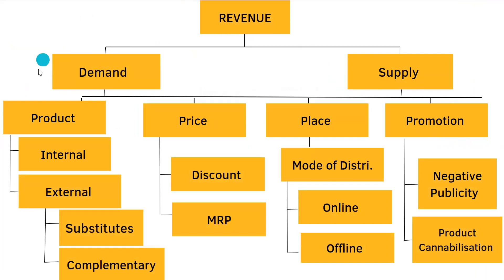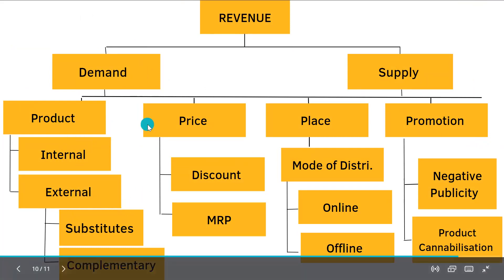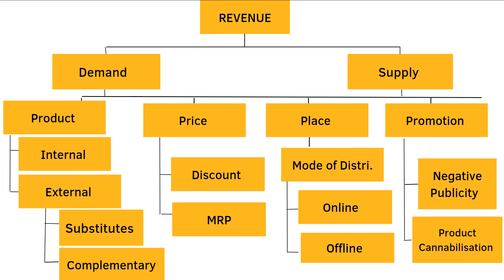Here is the model which clearly summarizes everything from the previous slides — revenue is affected by demand and supply, and on the demand side we have Product, Price, Place, and Promotion, with substitutes being identified as a key internal/external factor. The interviewer confirms at the end: yes, substitutes are one of the reasons behind the decreasing revenue.